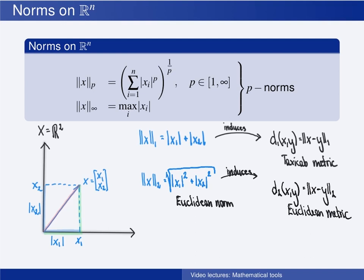As for the infinity norm, the same argument as we have made earlier also holds here. When p goes to infinity, the largest element raised to the power p will dominate all the others in the sum, and we are therefore left with this element raised to the power p, and then we take the pth root, leaving us with the element itself. So in the two-dimensional case, the infinity norm of x is the largest of the absolute value of x1 and the absolute value of x2 — the length of the longest line segment — and the infinity norm induces the infinity metric.